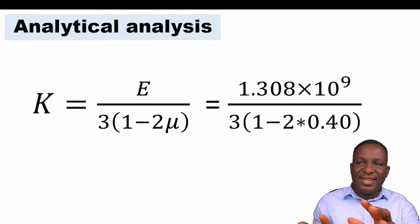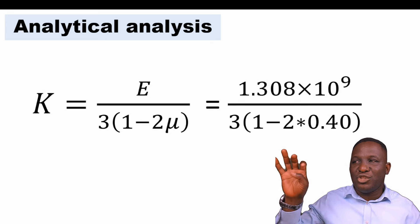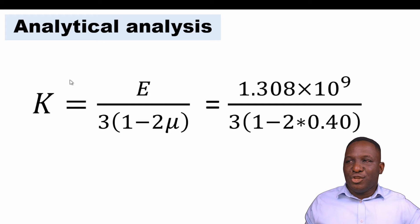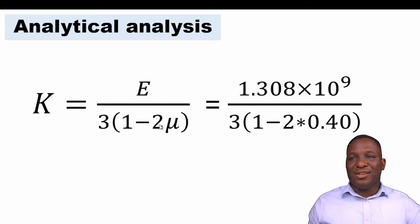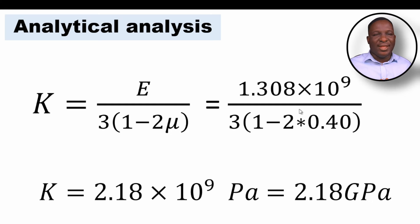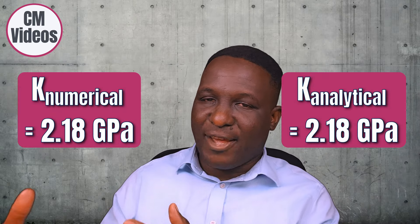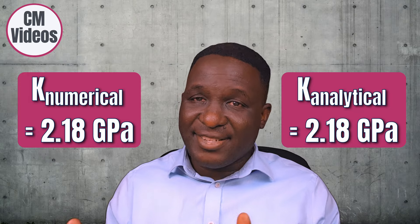The question is: how reliable are these data? Using the analytical formula that relates Young's modulus, Poisson ratio, and bulk modulus, with E = 1.308×10⁹ Pa and ν = 0.4, evaluating the equation gives exactly 2.18×10⁹ Pa — precisely the same value as obtained numerically. This gives us confidence that our numerical setup is valid and viable.